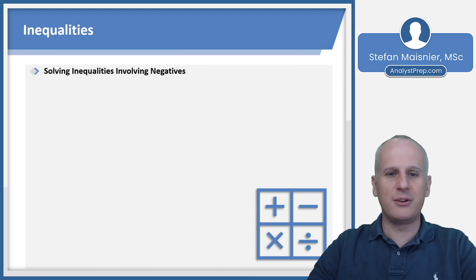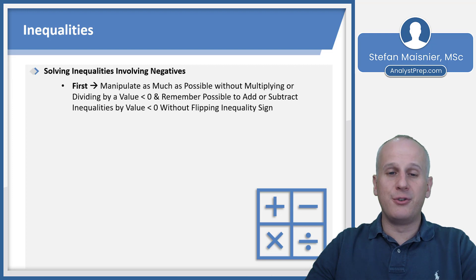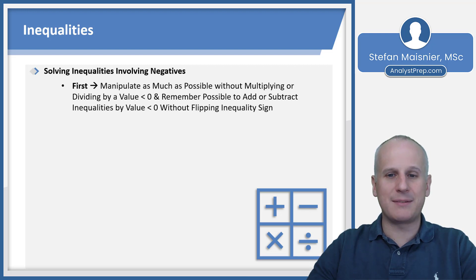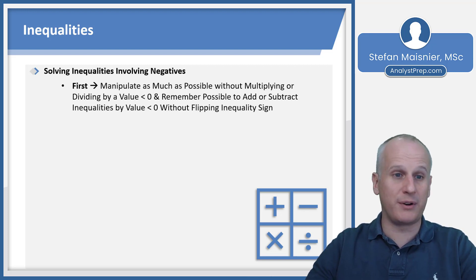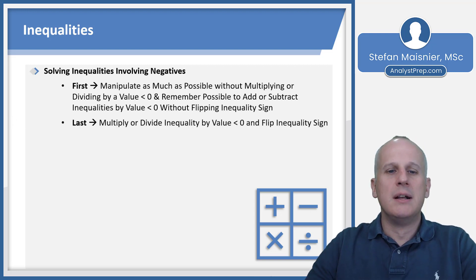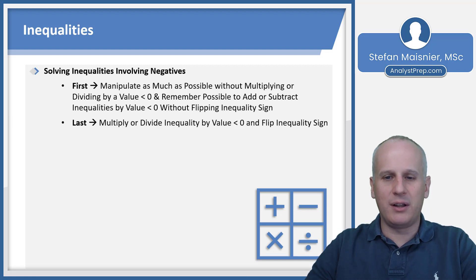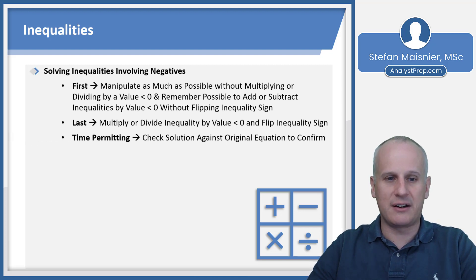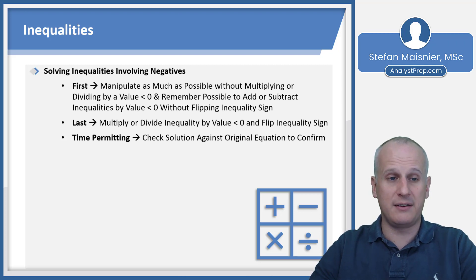When solving inequalities with negatives, manipulate as much as possible without multiplying or dividing by a value less than zero. Remember you can add or subtract a negative value from an inequality without flipping the sign. Then multiply or divide by the negative as the last step and flip the inequality sign if necessary. If you have time, check your solution against the original equation to confirm the right outcome.